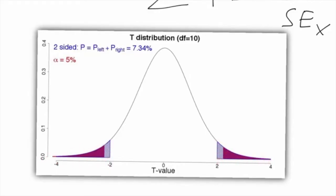If we test two sides, we can say that the p-value consists of a left and a right part, left of minus two and right of positive two. The total surface at 10 degrees of freedom is then 7.34%, and this is greater than our chosen alpha value of 5%, which you can see as the red surface on the graph. The left red surface plus the right red surface is equal to 5%, consisting of 2.5% on the left side and 2.5% on the right side.